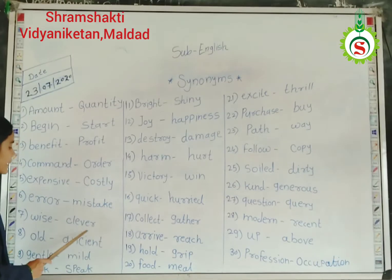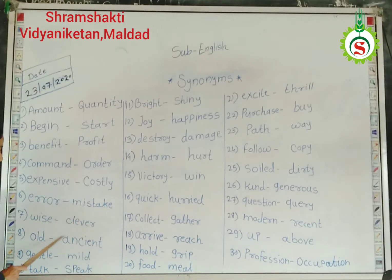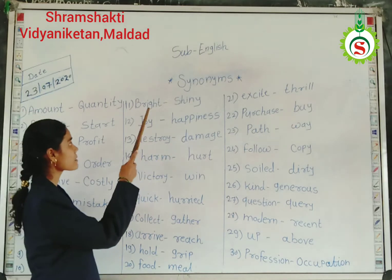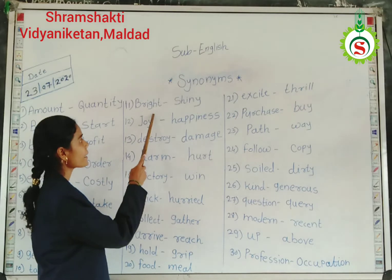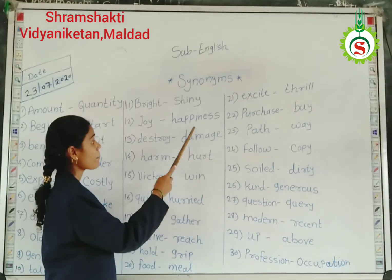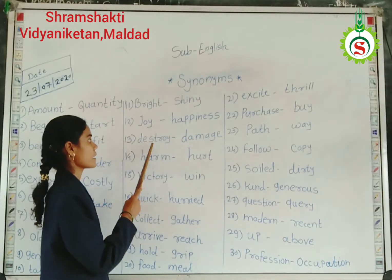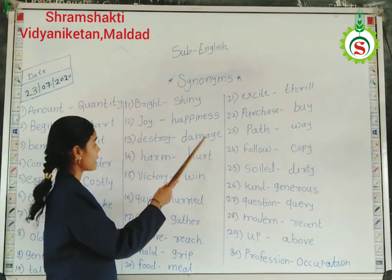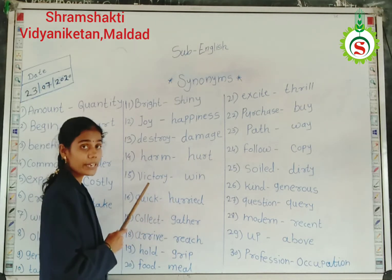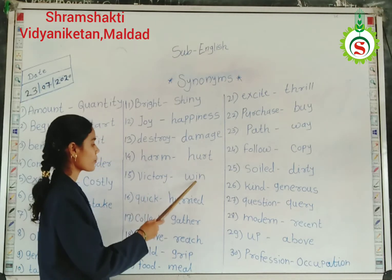Wise, clever. Old, innocent. Gentle, mild. Talk, speak. Bright, shiny. Joy, happiness. Destroy, damage. Hunt, thaw. Victory, win.